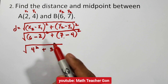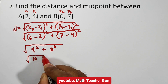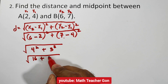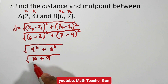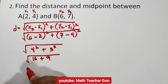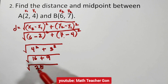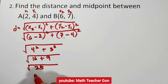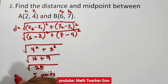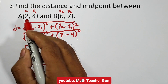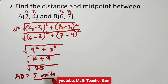4 squared is 16 and 3 squared is 9. The square root of 16 plus 9 is the square root of 25, and the square root of 25 is 5. Therefore, the distance between point A and B — that is AB — is equal to 5 units.